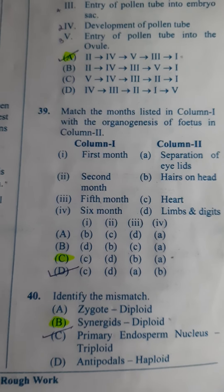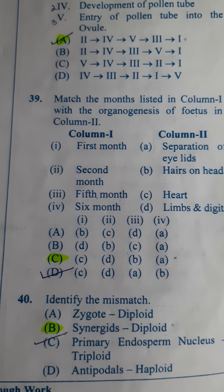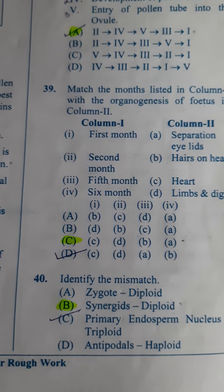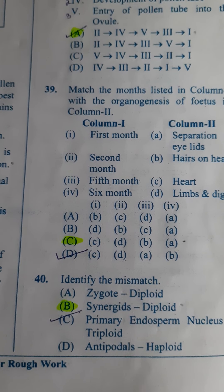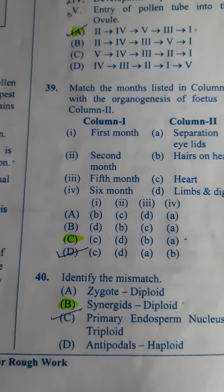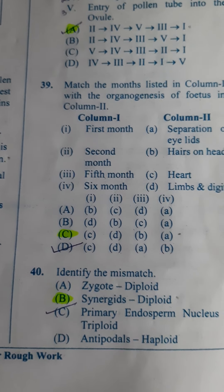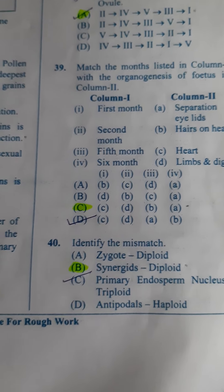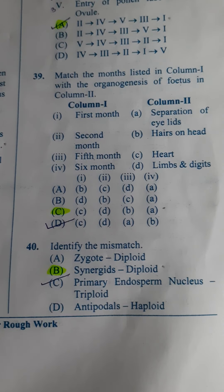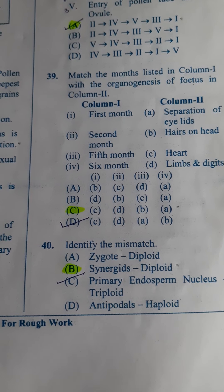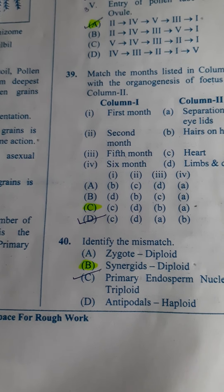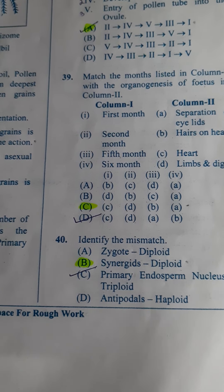Fortieth question: Identify the mismatch. Zygote is diploid — correct. Synergid are diploid — they have given, but it is wrong; synergids should always be haploid. C — primary endosperm nucleus is triploid; D — antipodals are haploid. So the wrong mismatch here is B. So B is the answer.